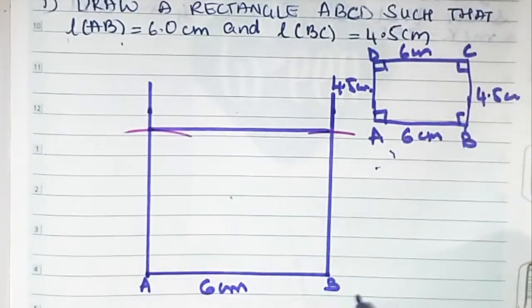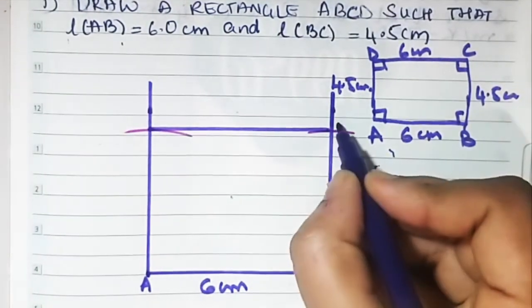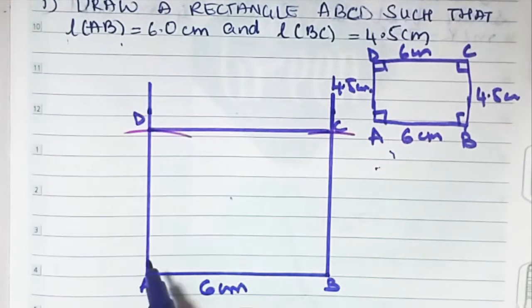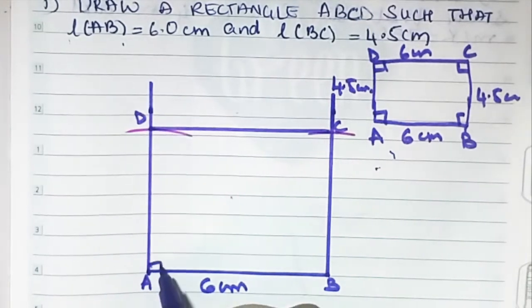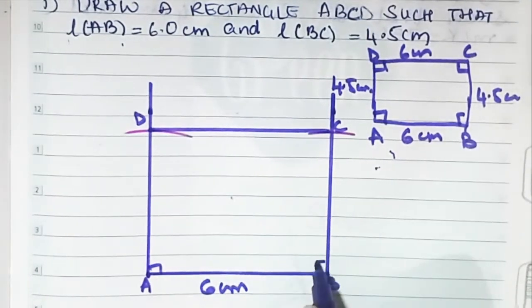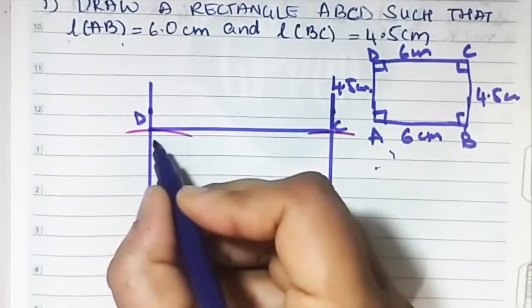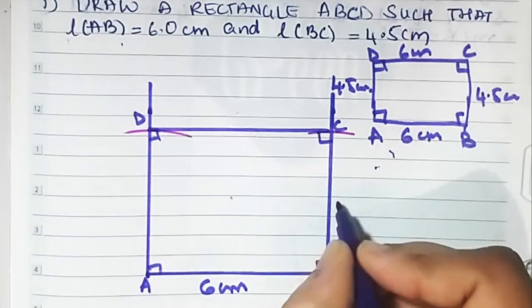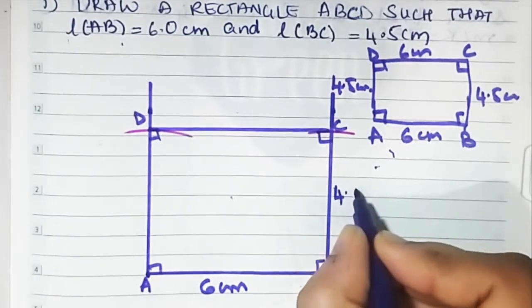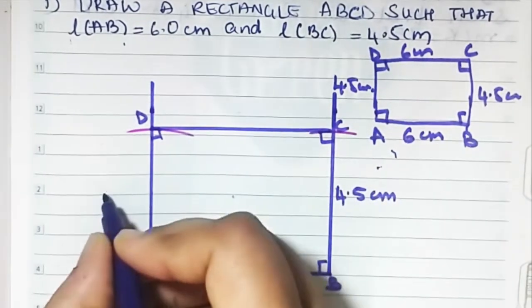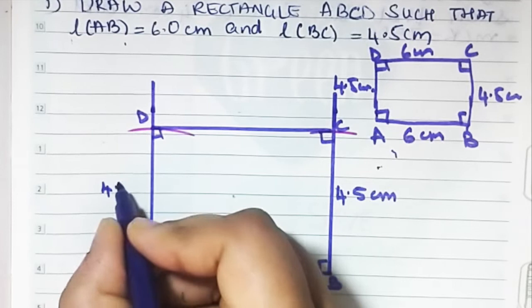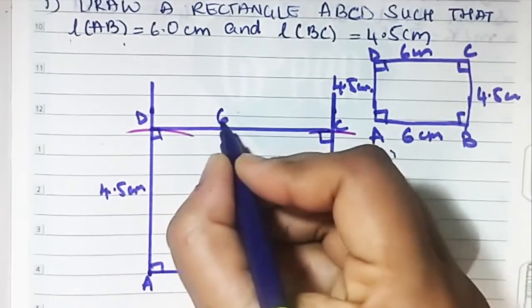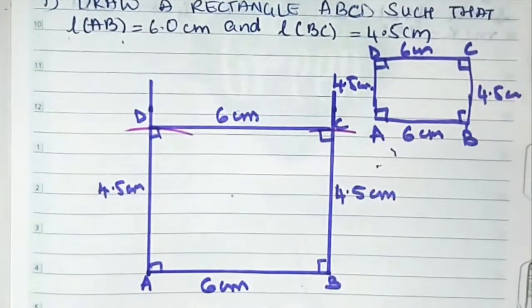Labeling is left: A, B, C, D. Mark 90 degrees at all four corners. 4.5 centimeters, 4.5 centimeters, 6 centimeters.